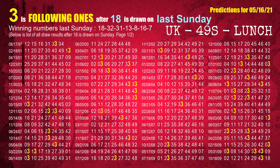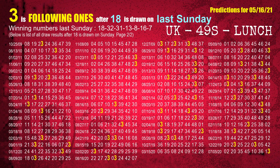After calculating following ones with today's result, we will find out following ones through the result of the same day last week. The first winning number last Sunday is 18. We list all draw results which are one week after a Sunday draw with 18 as a winning number. The most frequently following units digit is 3 when 18 is the winning number on last Sunday. We highlight the units digit 3 in yellow for you.